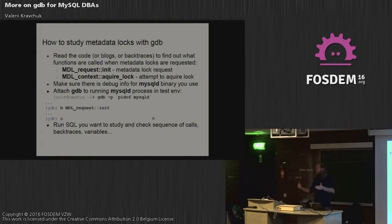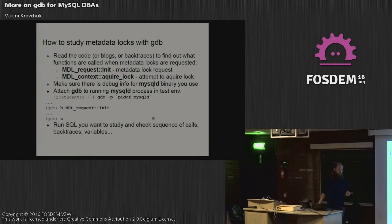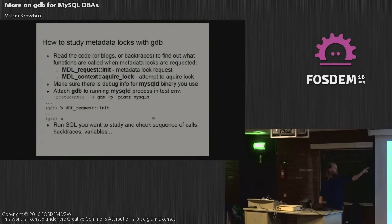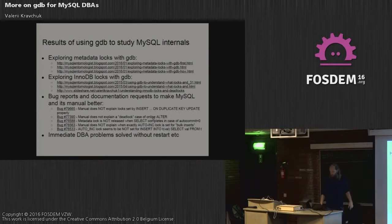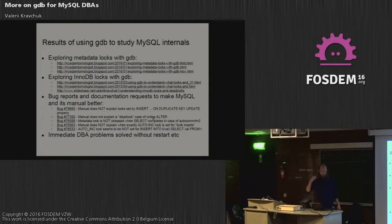The same approach applies to metadata locks. In MySQL 5.7 you can see metadata locks in performance_schema tables, but before 5.7 you have no visibility into what action is locking you. The fix is easy - find MDL_request, which is a class, set a breakpoint on its member function, and you will see every metadata lock request. You easily end up with useful conclusions, which I published in blog posts and bug reports.